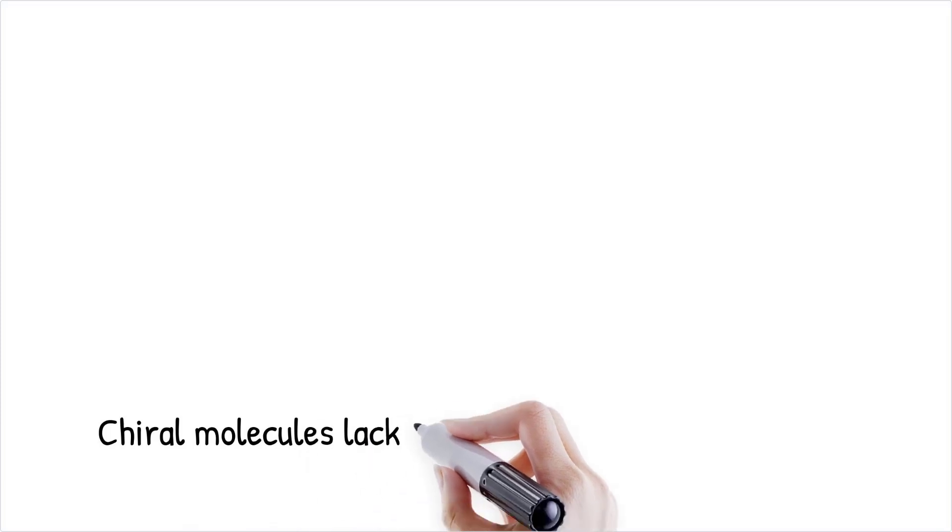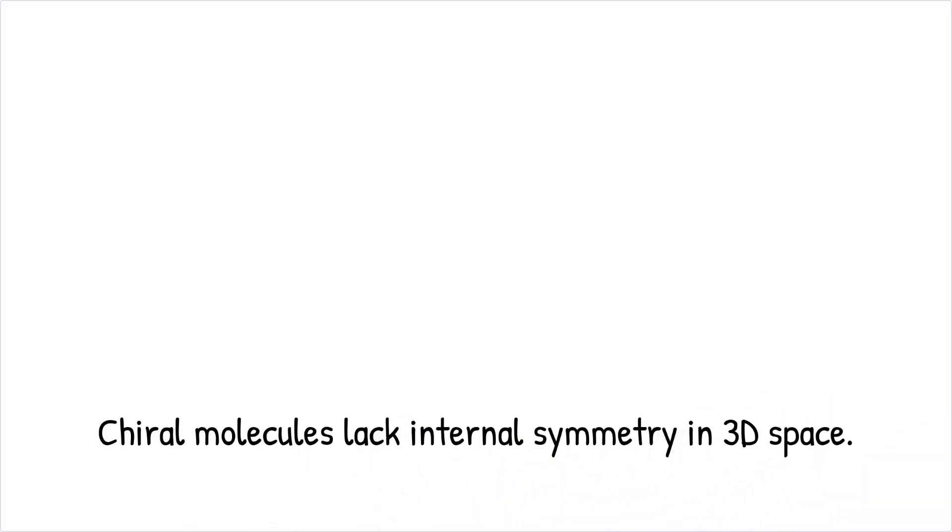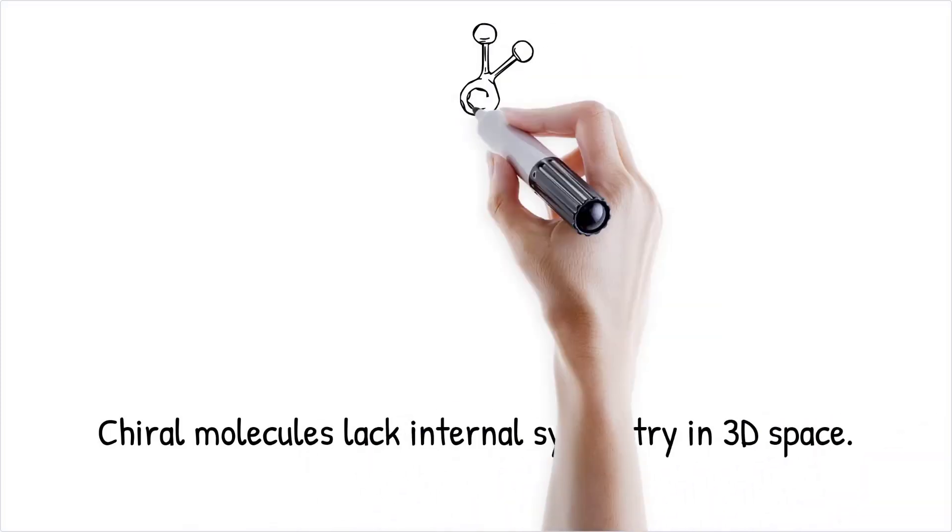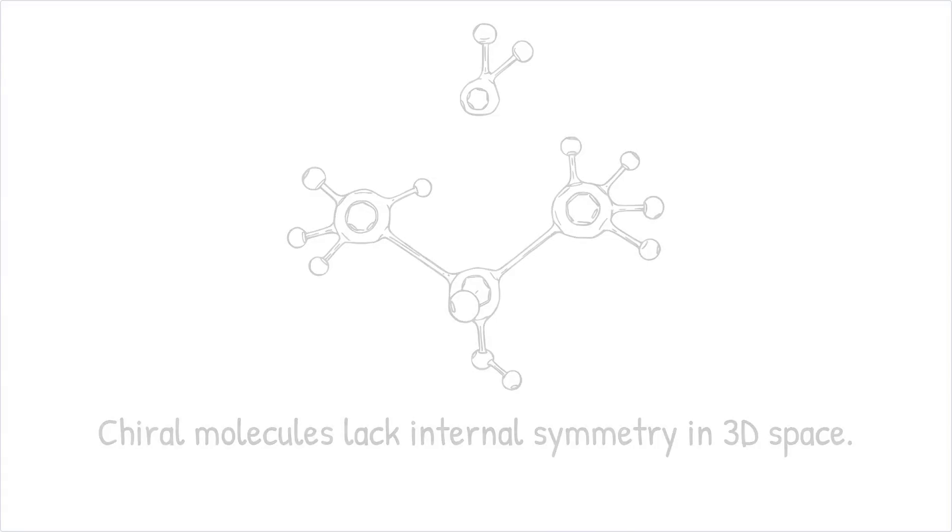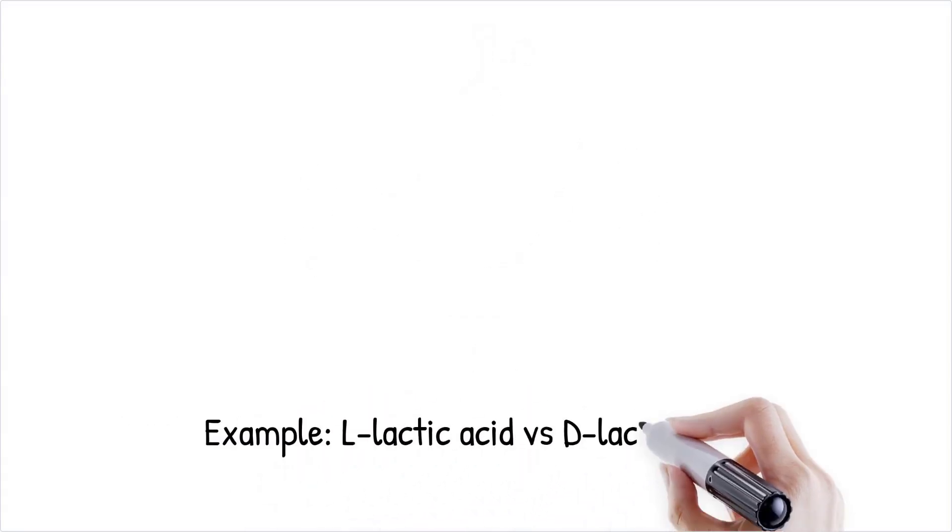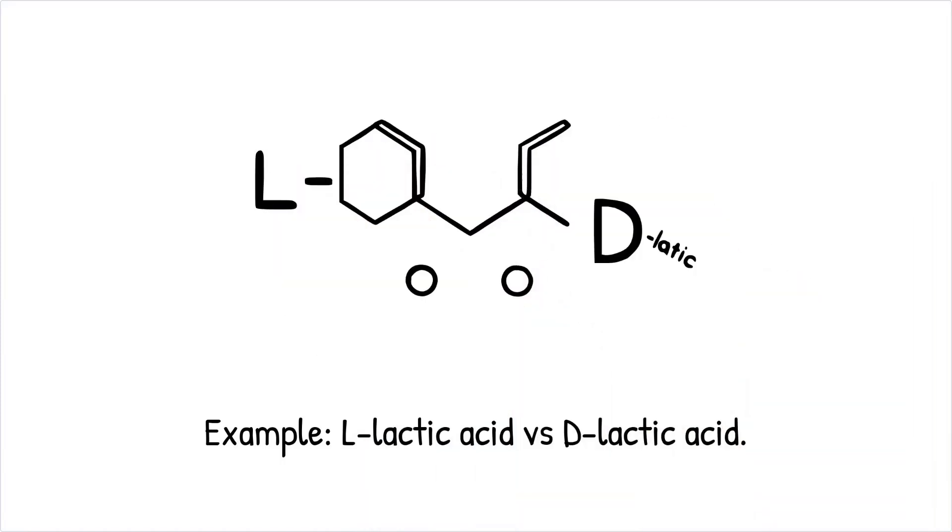In three-dimensional space, chiral molecules lack internal symmetry, which is why they cannot be superimposed on their mirror images. This property gives them distinct physical and chemical behaviors when interacting with other chiral molecules or systems. Lactic acid has a chiral carbon atom and exists in two forms: L-lactic acid, found in muscles during exercise, and D-lactic acid, less common in nature.